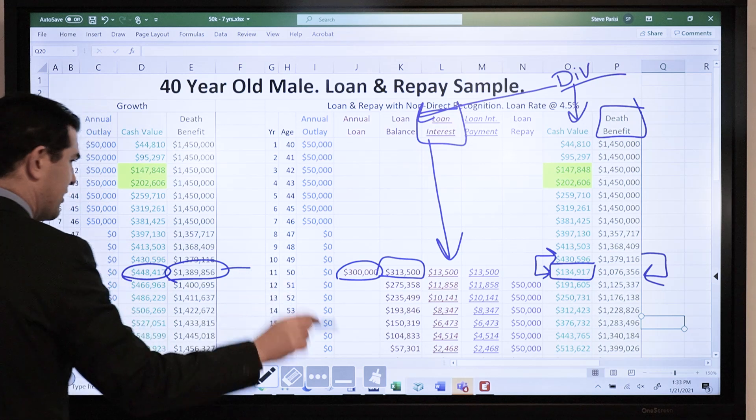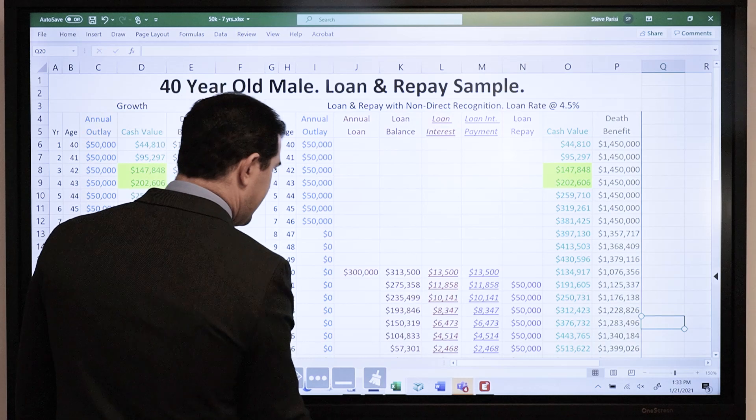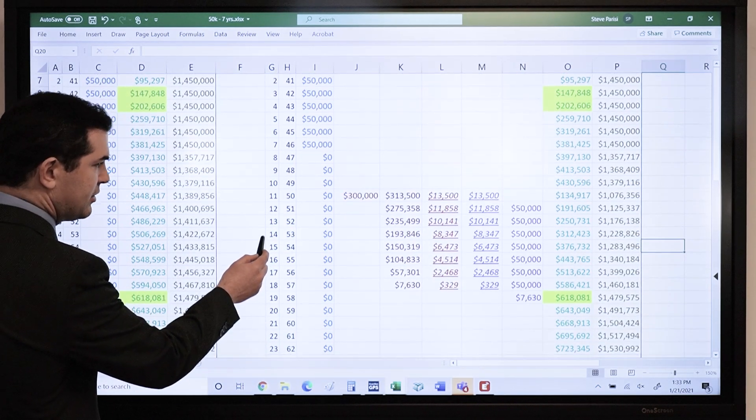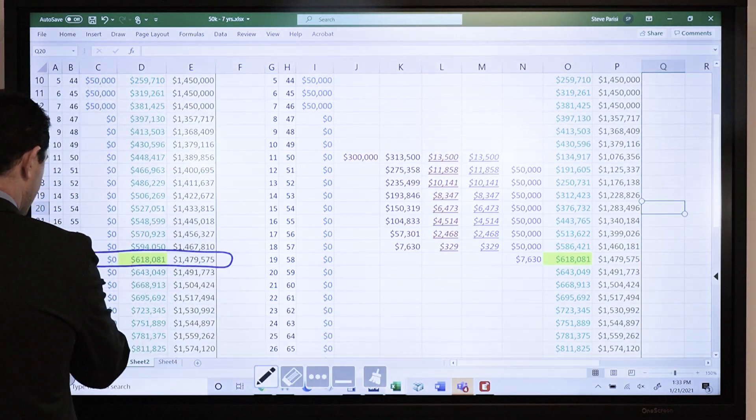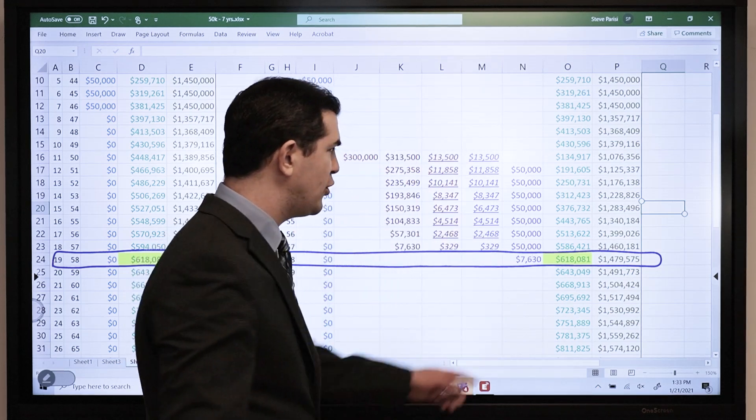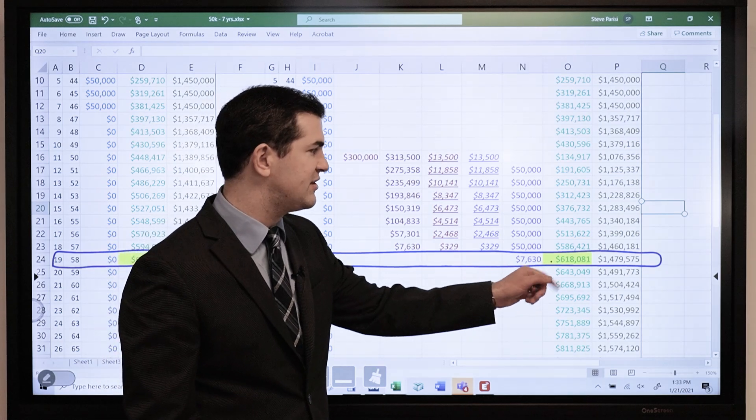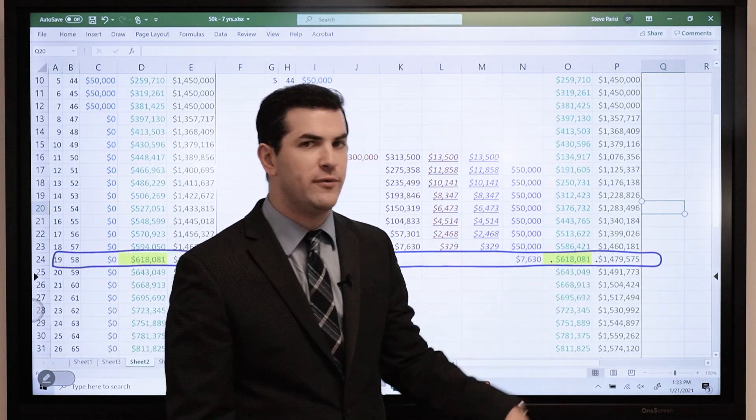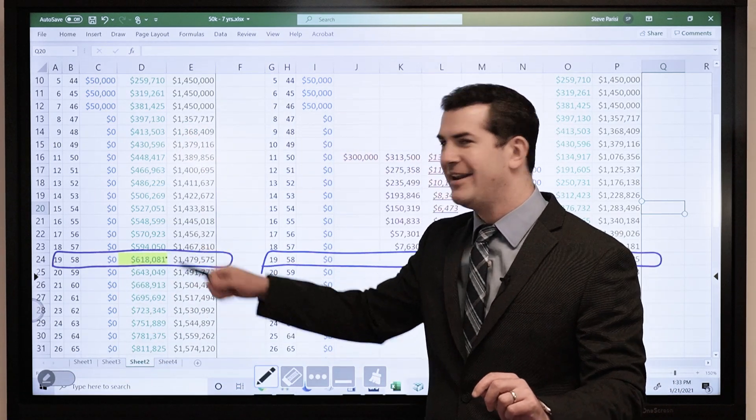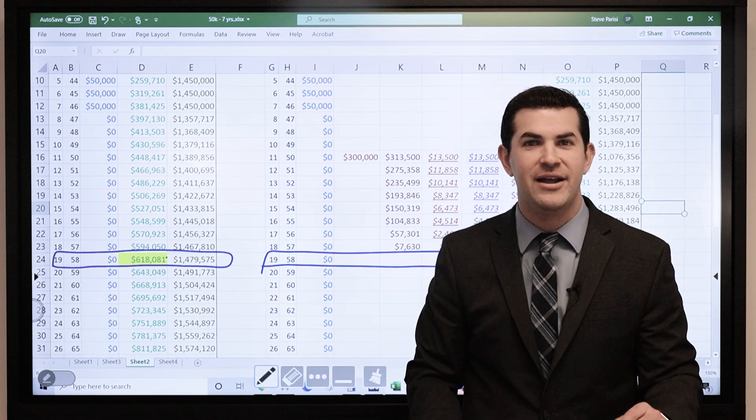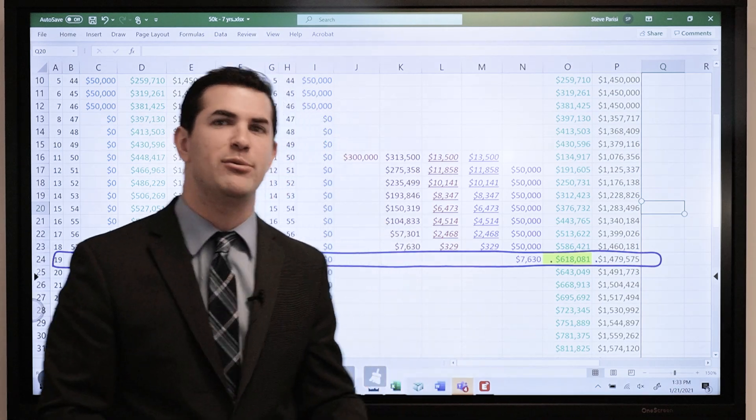Now as time passes, here's the fun part. That's when my loan's paid back. So when I pay that loan off, what's my cash value? $618,000, death benefit $1.479 million. When I never touched the policy, what's my cash value? $618,000, death benefit $1.479 million. Identical. No lost opportunity cost, money kept on compounding, kept moving forward for me.